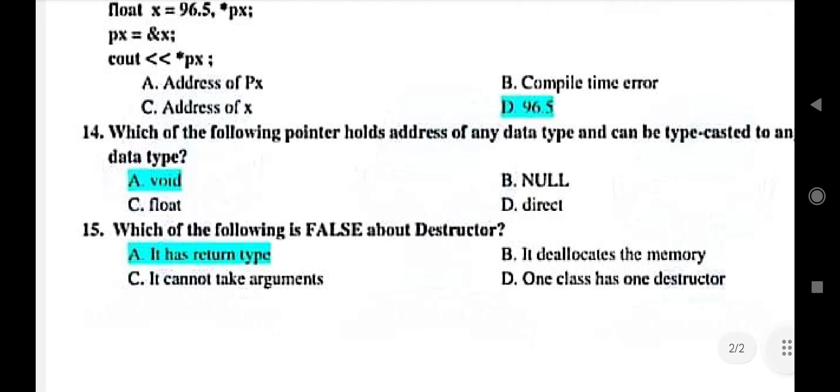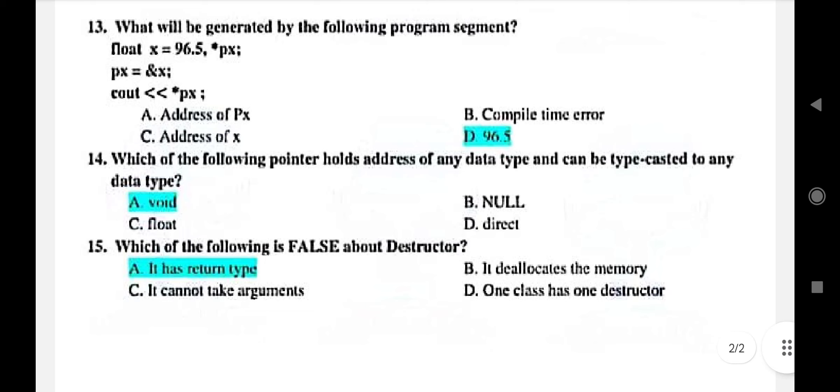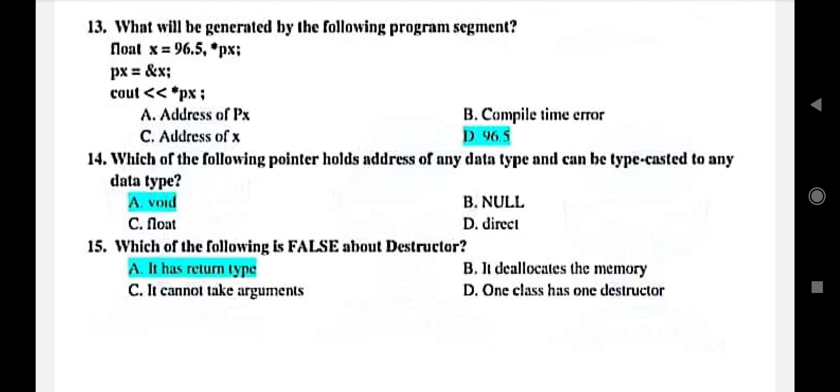Which one of the following pointer holds the address of any data type and can be typecasted to any data type. So that is option A. Then which one of the following is false about destructor. So that is option A. It has return type.